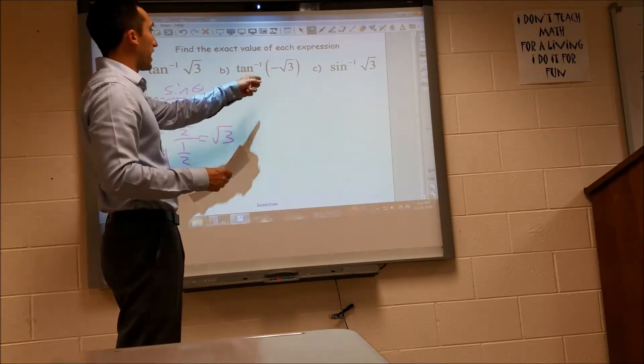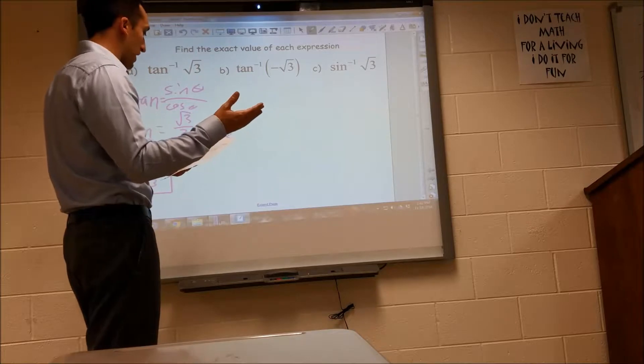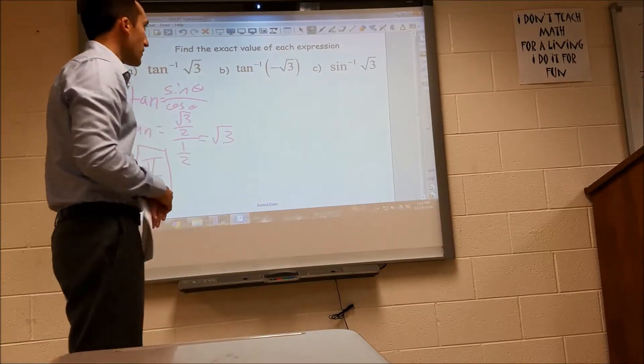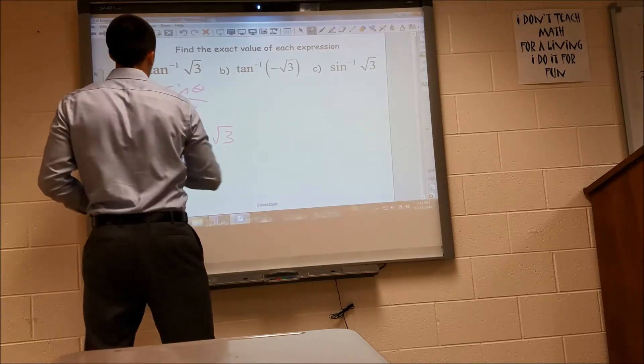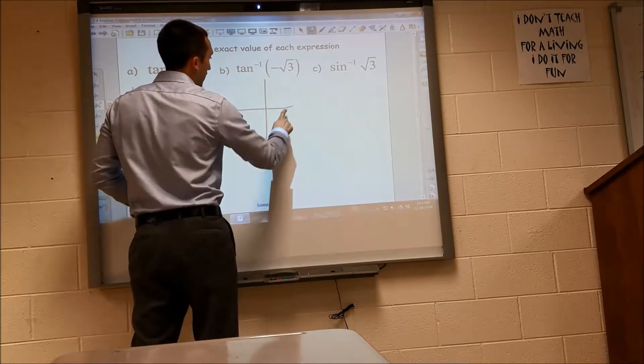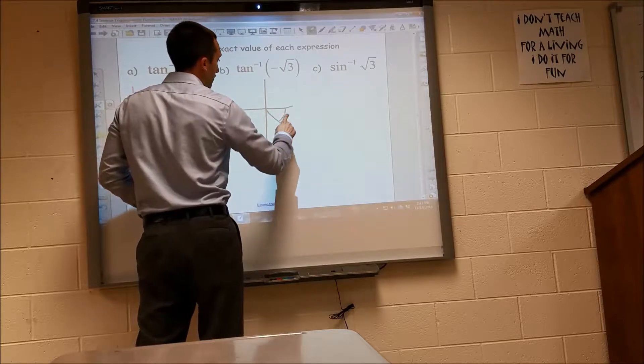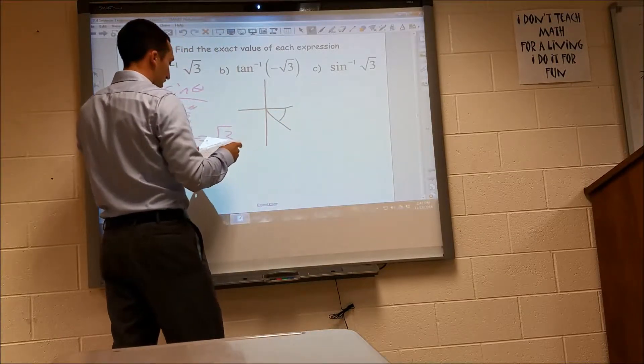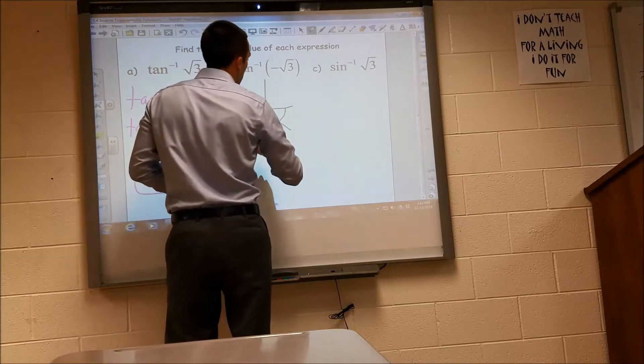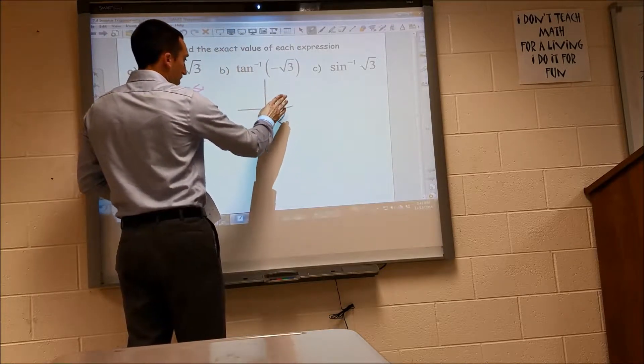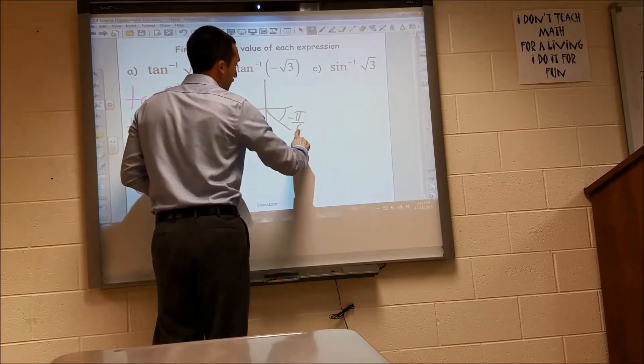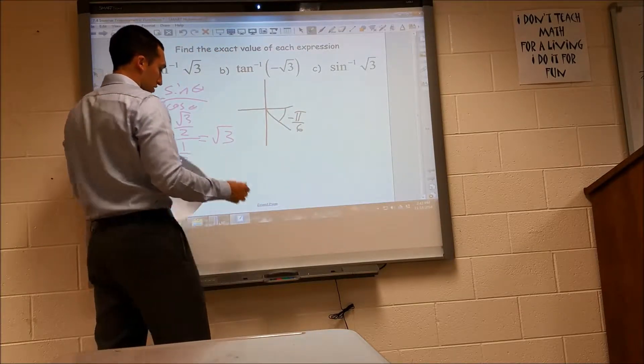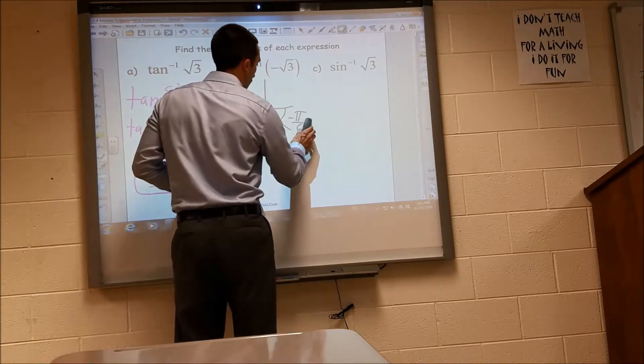So here we have tangent, we want the inverse tangent of negative radical 3. So negative radical 3 is in the 4th quadrant. Our negative angle would be negative pi over 6 there. I'm sorry, that should be negative pi over 3.